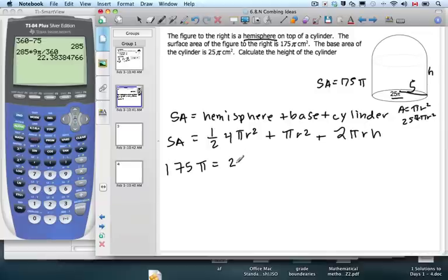So we can say 2 times 25 times pi, and then we have the area of the base, which we don't even have to use this formula because we know it's 25 pi. Plus 2 pi times 5 times h, which is 10 pi h.